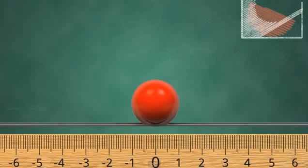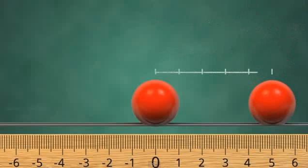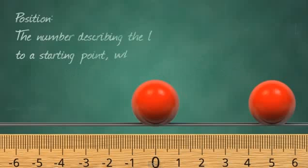If we drop another ball somewhere else, we can compare the locations of the two balls. This new ball has a constant position equal to positive 5 centimeters, because it is 5 units to the right of the origin at zero. And since we've set up the ruler so that balls to the right of zero have positive position, this means that balls to the left of zero will have negative position. So let's define position as the number describing the location of an object compared to the starting point, which we can choose.